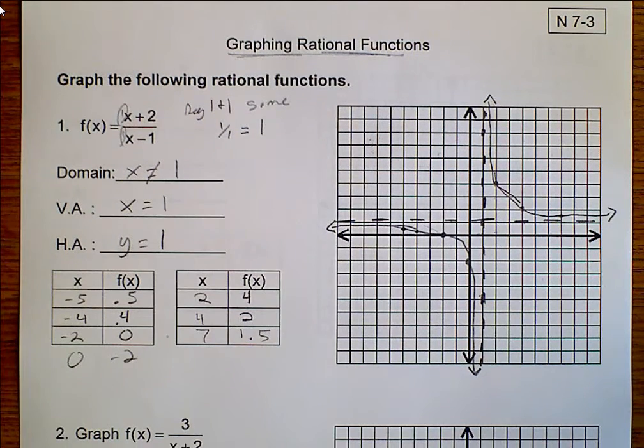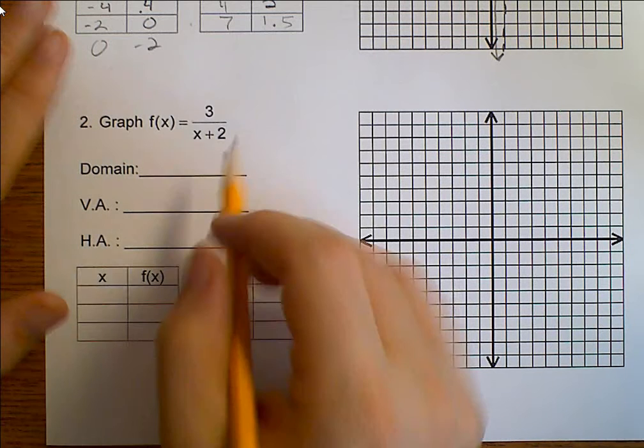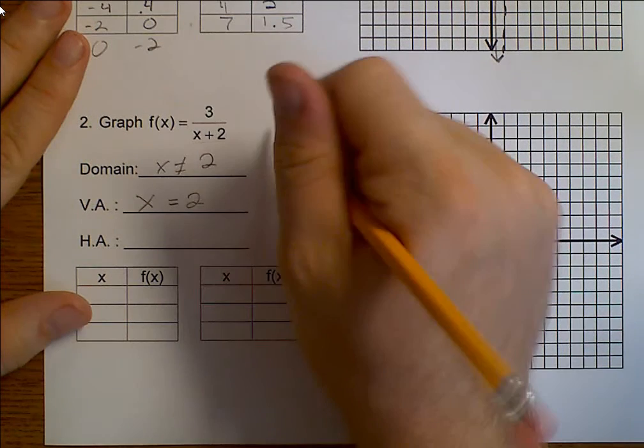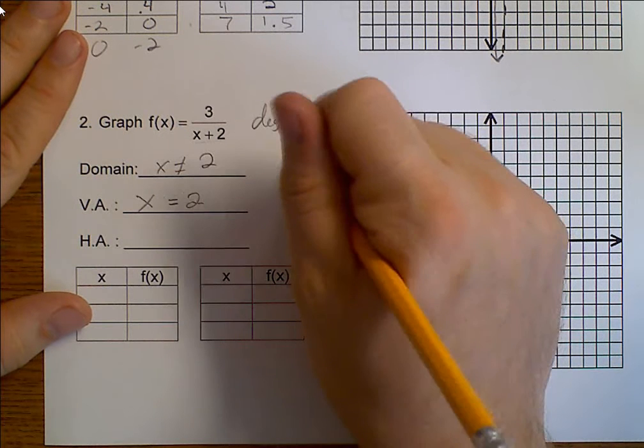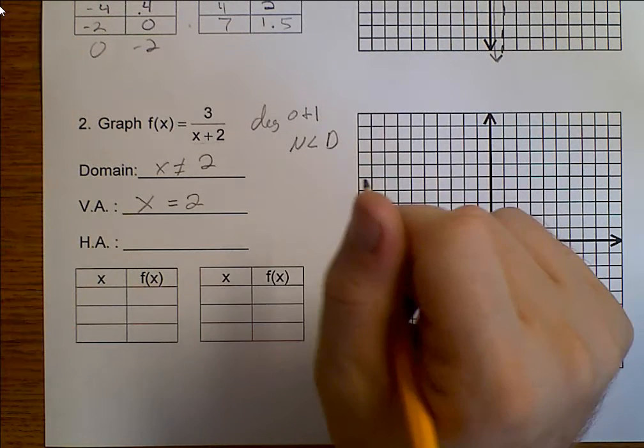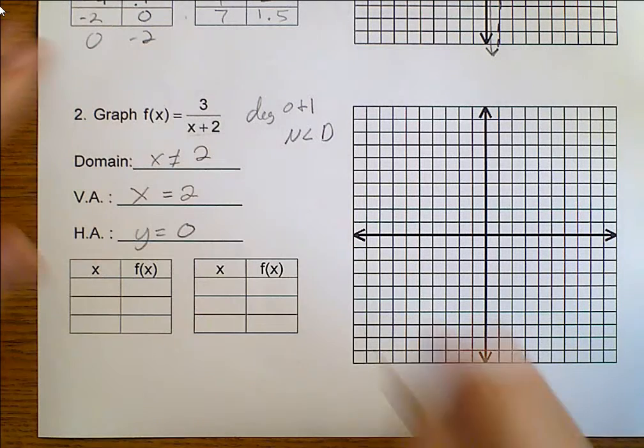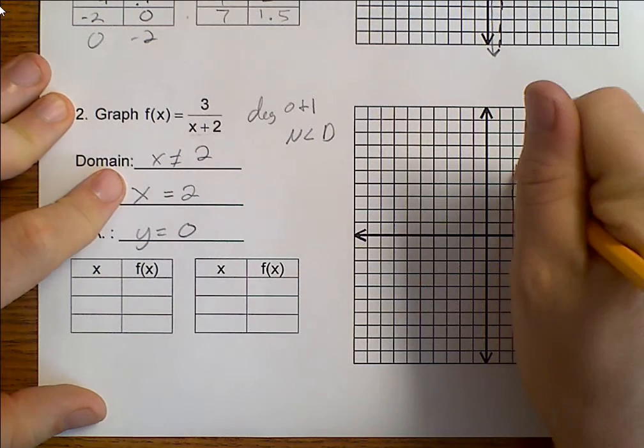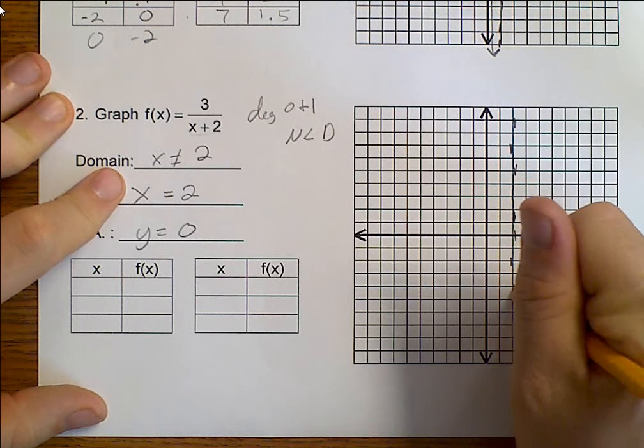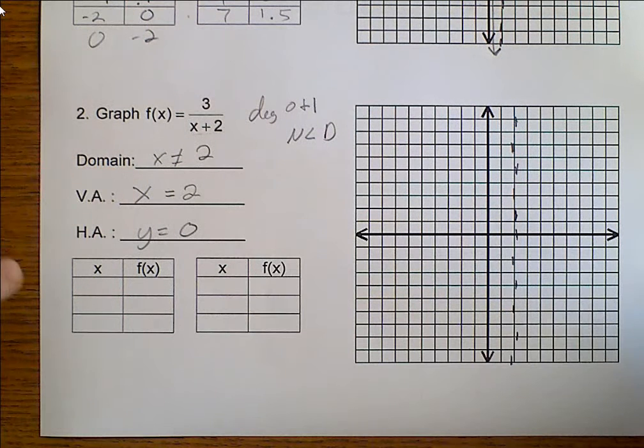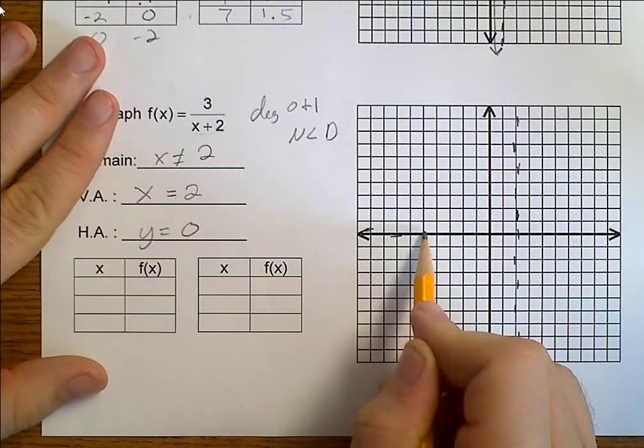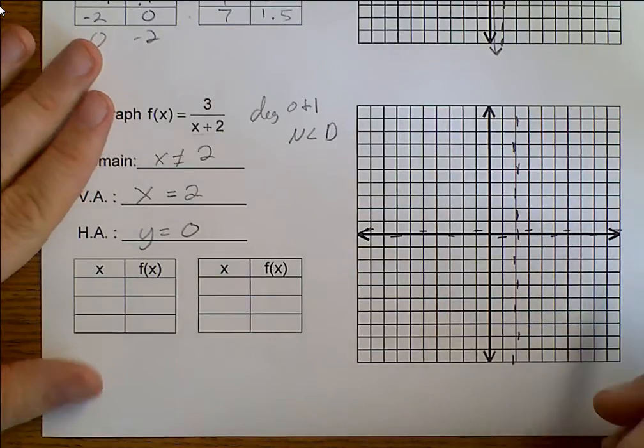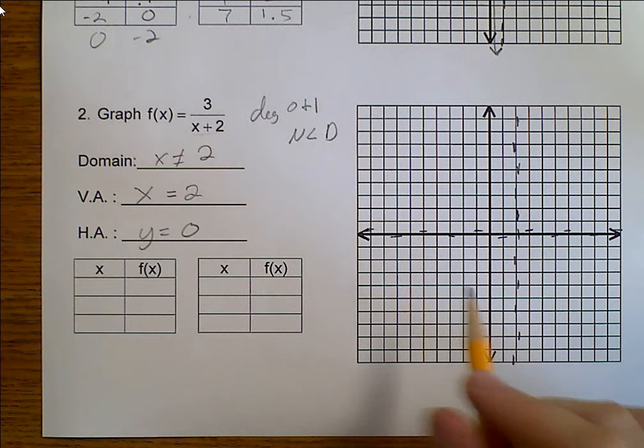Let's go ahead and look at graph number 2. Well, here we know that x cannot be equal to 2. So a vertical asymptote is at x equals 2. Horizontally, our degrees are 0 and 1. n is less than d. When it's less than, a horizontal asymptote is at 0. So we come over here to x equals 2. And over here, y equals 0.